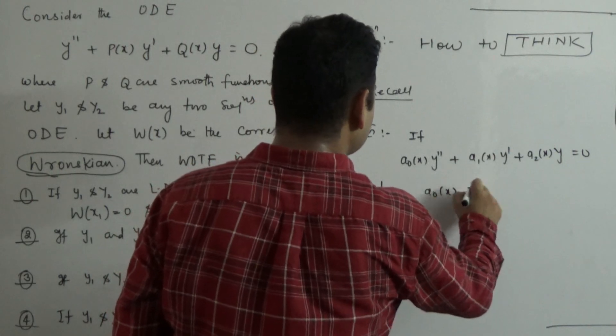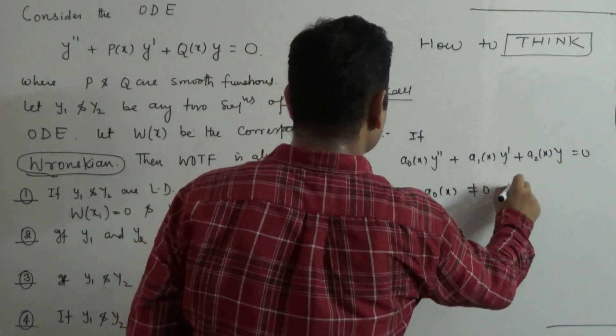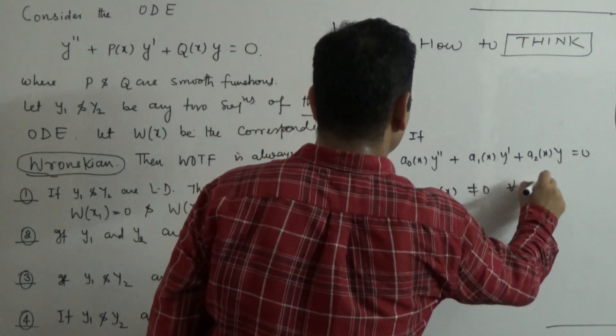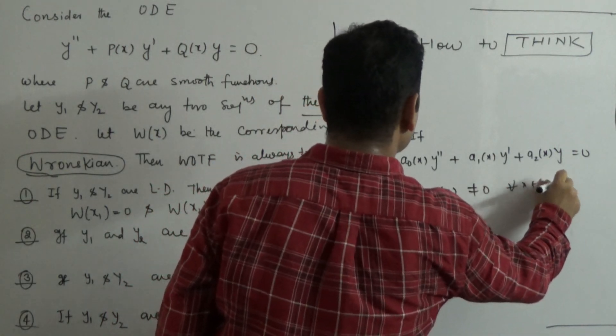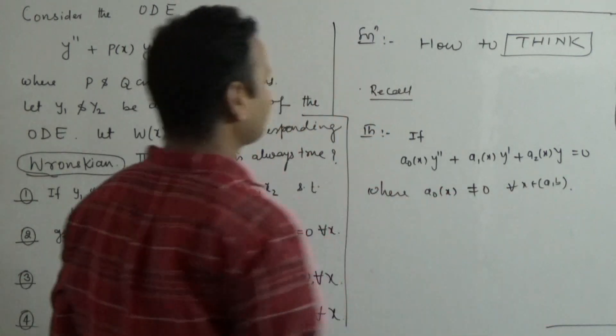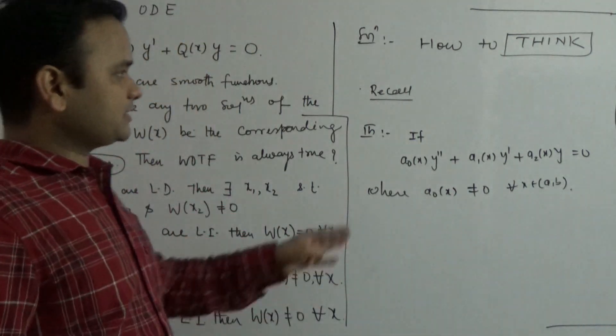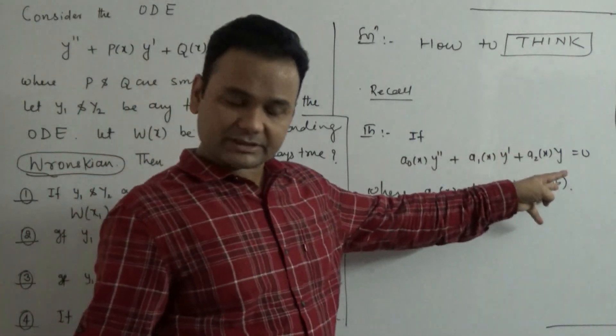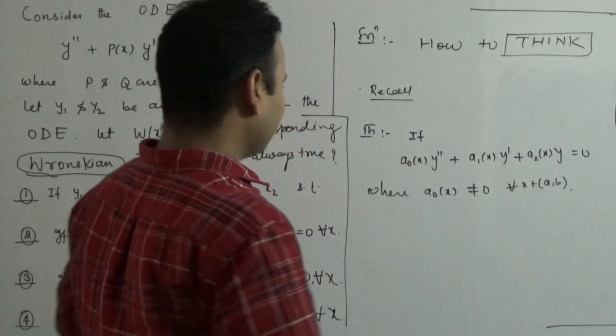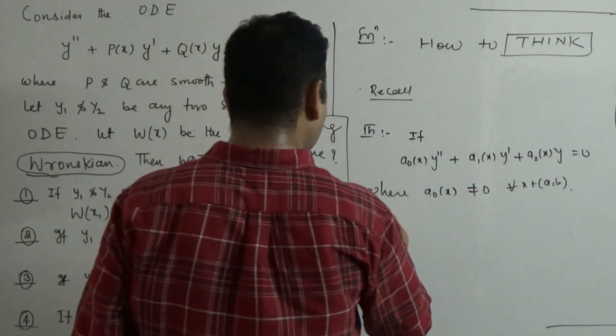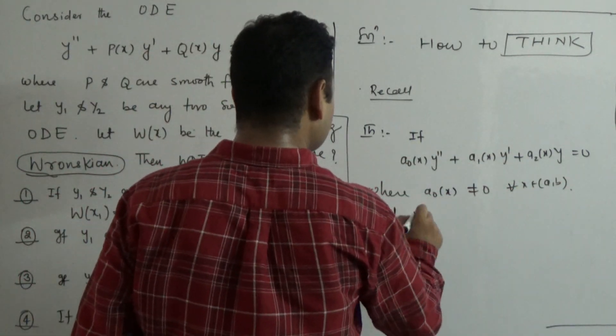...where A0(x) is not equal to zero for all x, and A0(x), A1(x), A2(x) are continuous (smooth) functions, and y1 and y2 are two solutions of this differential equation...